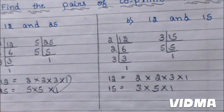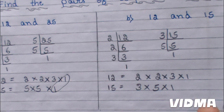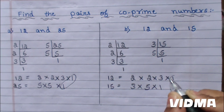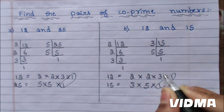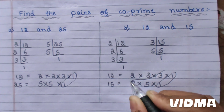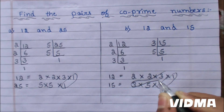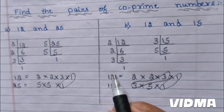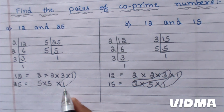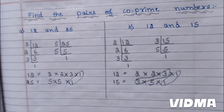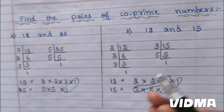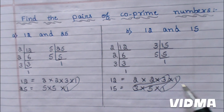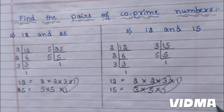In 12 and 25, there is only the common factor 1, so 12 and 25 have no more than 1 common factor. In 12 and 15, there are more than 2 common factors, so 12 and 25 are co-prime numbers.